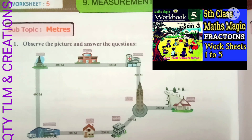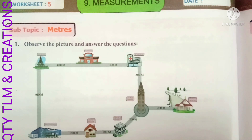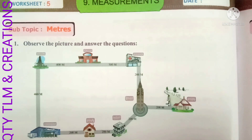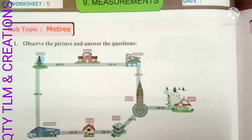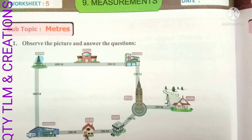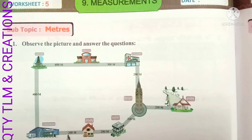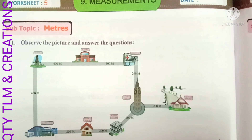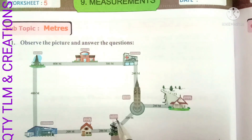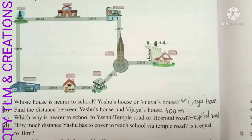Next question: which way is nearer to school for Yeshu, temple road or hospital road? This is temple road and this is hospital road. Temple road covers a total of 1000 meters; hospital road covers 900 meters. So hospital road is nearer to school for Yeshu.